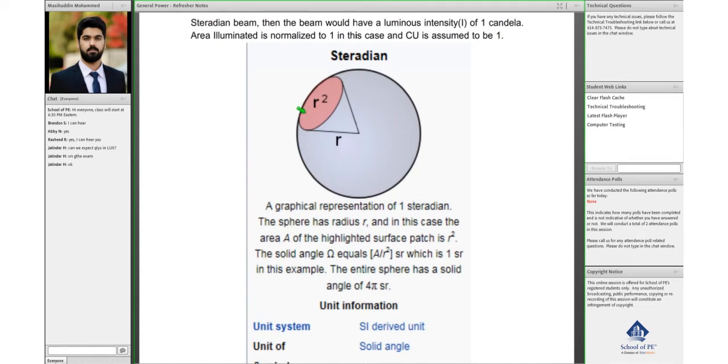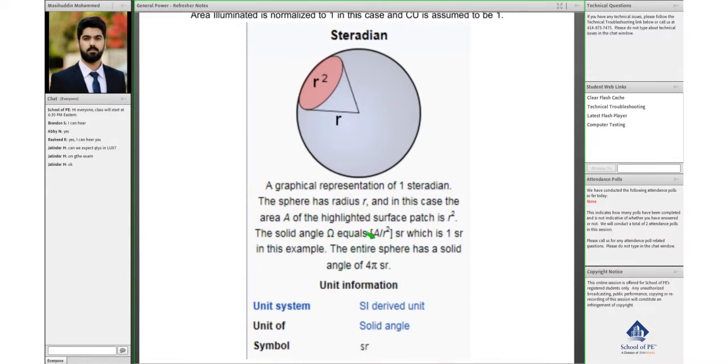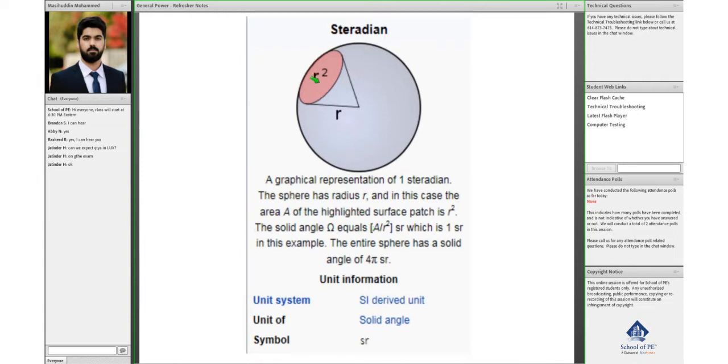The surface area of R square, and the solid angle equals A by R square. In this case, it's one because the surface area is R square.